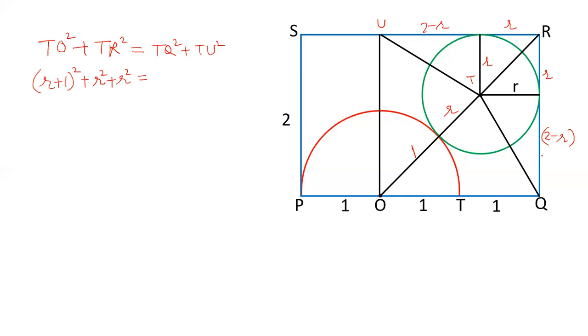What is TQ? TQ is R square plus 2 minus R square by Pythagoras theorem. Let us solve this equation.